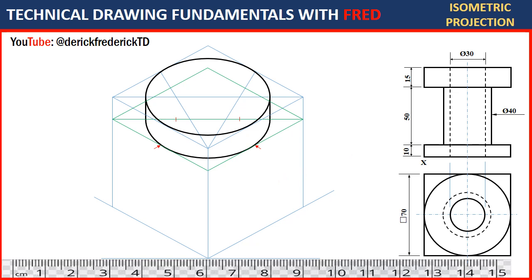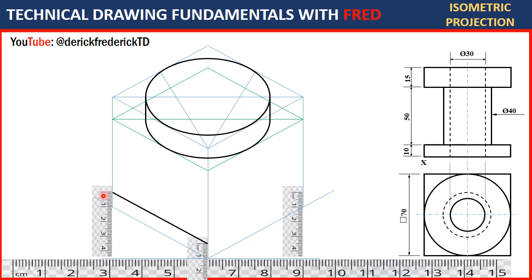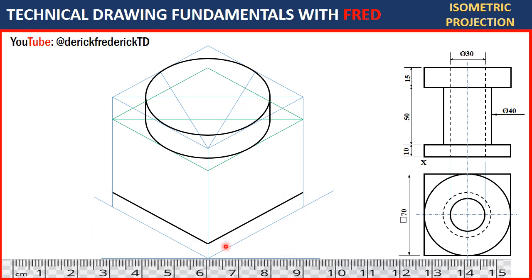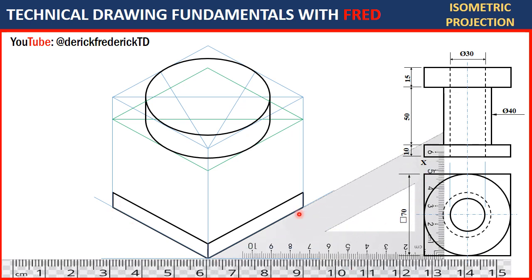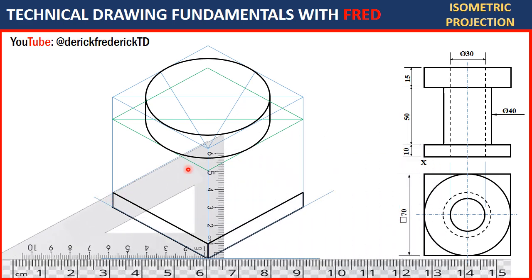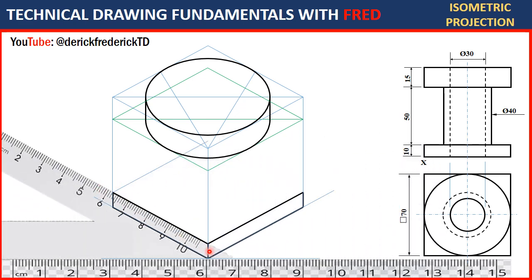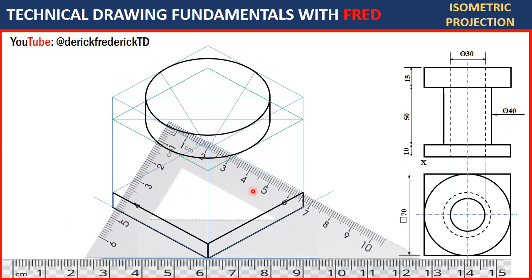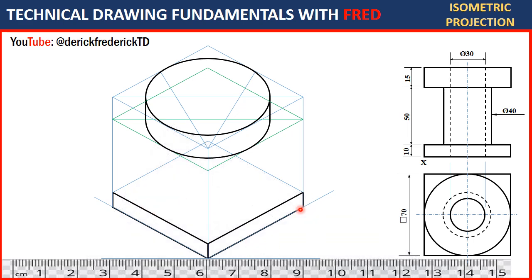Now we want to draw the bottom base. This is 10, so measure 10 here, and measure 10 here, and measure 10. Connect them with thick lines — that's 10. Draw the remaining parts with thick lines and you have that. Align your set square in this form and transfer lines, then draw a thin line. Transfer lines again and they will meet the line you just drew. Now we want to draw the cylindrical part of 40mm diameter for the base.